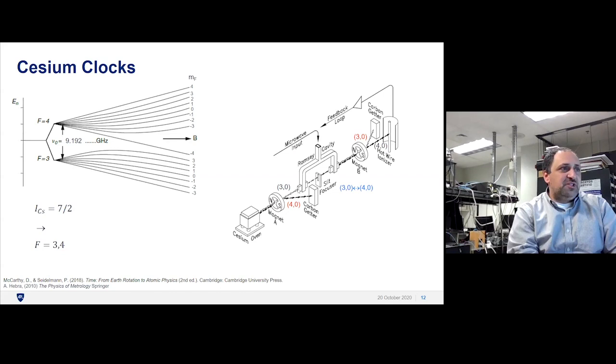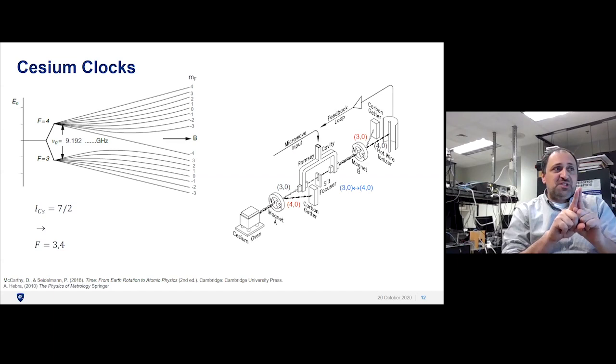If you're in the F equals three zero state, you keep moving. You go into the Ramsey cavity, where microwaves are applied at 9.192 gigahertz. That manipulates the atoms, their spin states. It keeps going for a distance, and you do that again. You've taken all your three zero, changed them into four zero, and now you have a superposition of three zero four zero. You let the spins evolve. You start with the spins in one state and mix them up.